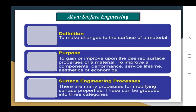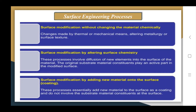There are many processes for modifying surface properties, and these surface engineering processes are grouped into three main categories. The first category is surface modification without changing the metal chemically — changes are made by thermal or mechanical means as well as altering the metallurgy or surface structure. The second group is surface modification by altering surface chemistry, where processes involve diffusion of new elements into the surface of the metal, and the original substrate metal plays an active part in the modified surface.